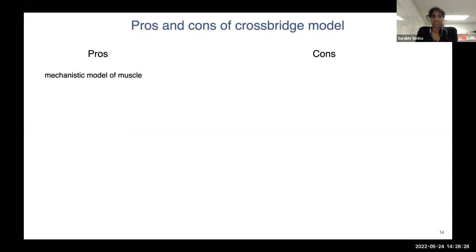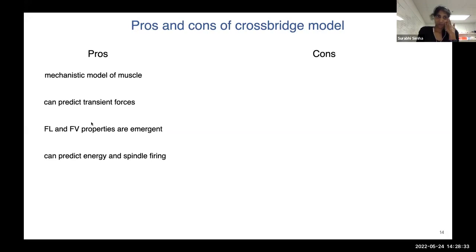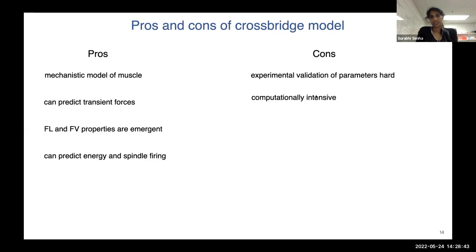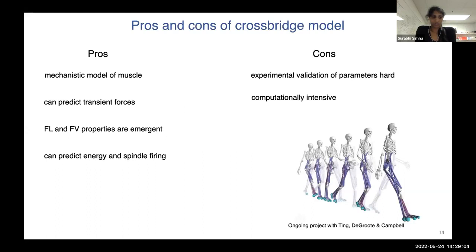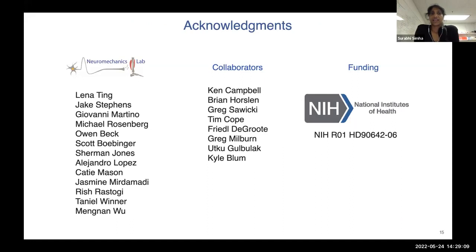Some pros and cons of the crossbridge model: on the pros side, it captures things we care about. On the cons side, we cannot validate all of the parameters, and the crossbridge model is computationally intensive — especially as we scale up and try to use it in feedback control. However, this is an active area of research we aim to improve, and improvements in computational technology will also help.